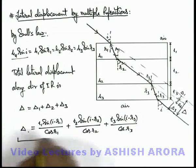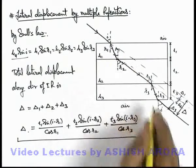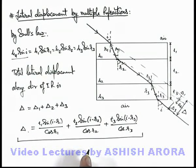So this is the total lateral displacement of the light ray due to multiple refraction by parallel-sided slabs. This is also an important relation you need to understand how we are getting the result.